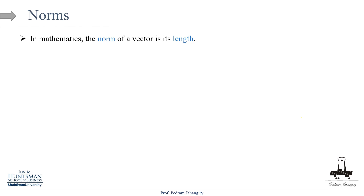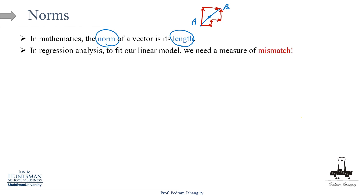Now let's see how we can add regularization to our linear regression models. First we need to define norms. In mathematics, the norm of a vector is its length — it depends on how we define the distance between two points. For example, from point A to point B, depending on how we define the distance we come up with different norms. In regression analysis, to fit our linear model we need a measure of mismatch between y and y-hat — this mismatch is our error vector.